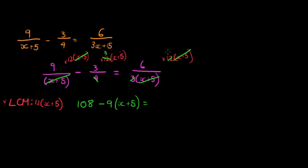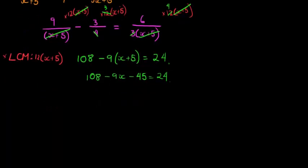It's equal to on this side, the X plus 5 cancels X plus 5, and the 3 divides into the 12 four times. So it's equal to 6 times 4 which is 24. And now I can simplify. I've got 108 minus 9X minus 45 is equal to 24.